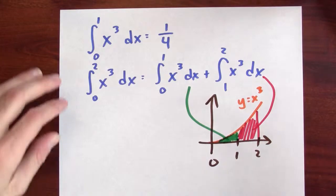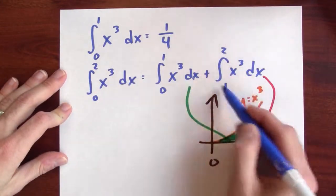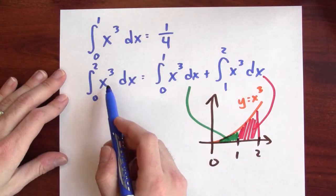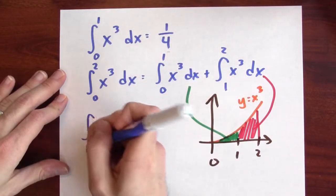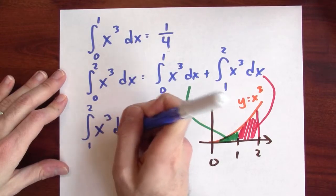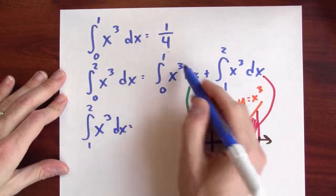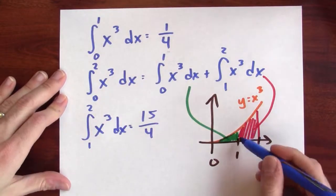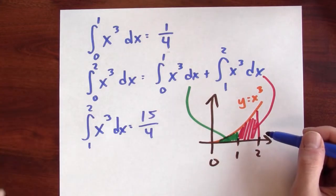Well, the nice thing here is that since I know this integral and I know this integral, that's enough information to recover this integral. The integral from 0 to 2 we saw a moment ago is 4. The integral from 0 to 1 I'm claiming here is a quarter. And that's enough information then to tell me that the integral from 1 to 2 of x cubed dx must be exactly what I need to add on to a quarter to get 4. That must be 15 fourths. So this red area in here must be 15 fourths square units.